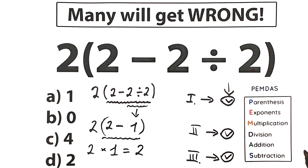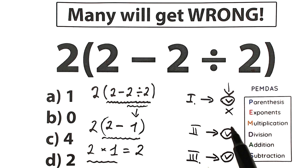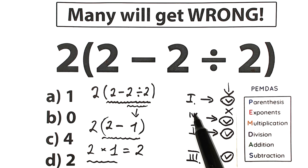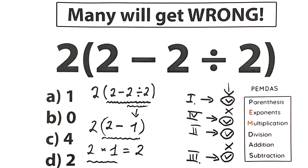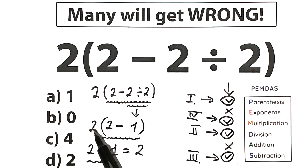Looking back at our PEMDAS order, we skip the exponent step. Our final step is multiplication — 2 times the result of the parentheses. We don't have any addition sign. To summarize: first we handled the parentheses; inside the parentheses we divided first, then subtracted; and the last step was the multiplication by the 2 at the beginning.